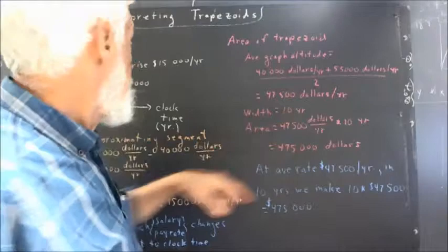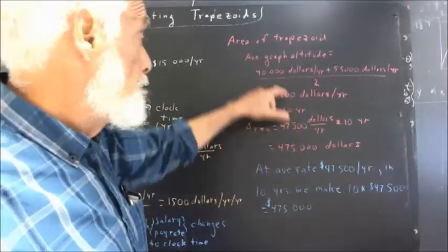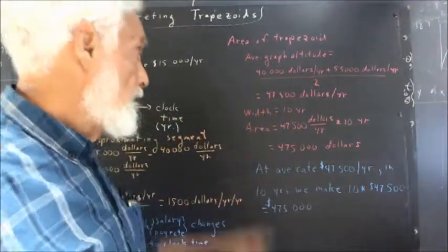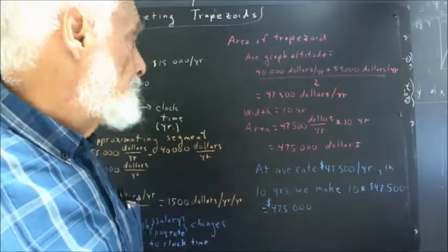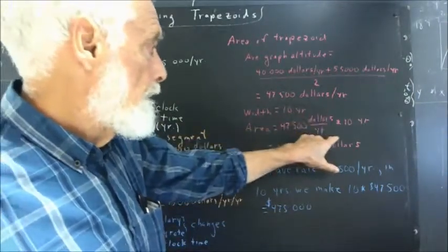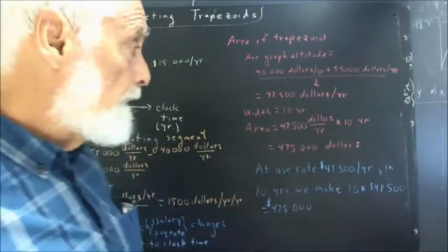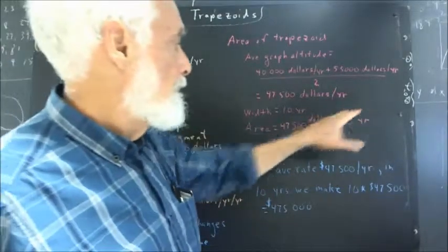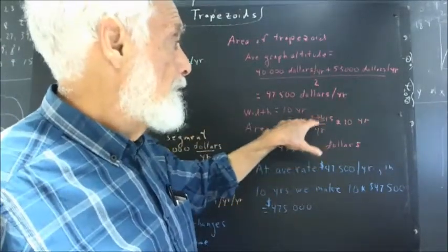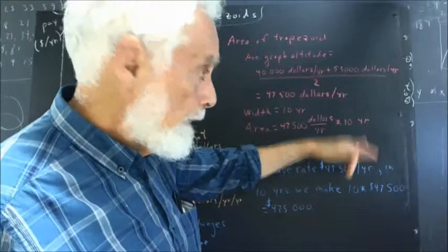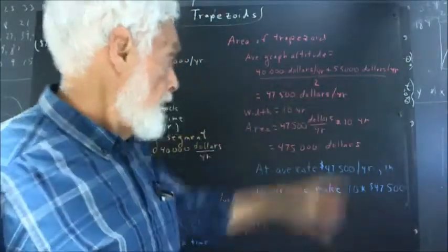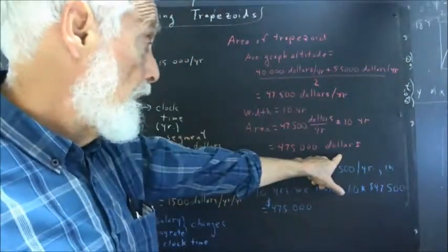The width is 10 years, so we multiply these two dimensions. The average altitude by the width gives us the area, $47,500 per year multiplied by 10 years. Dollars times years over years is dollars times years divided by years. Years divided by years is unity, and multiply that by dollars, and we get dollars.